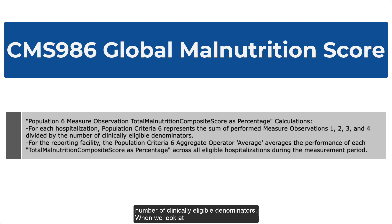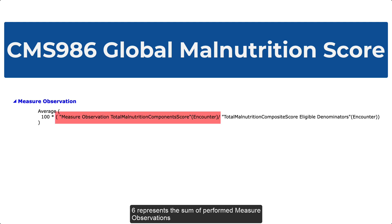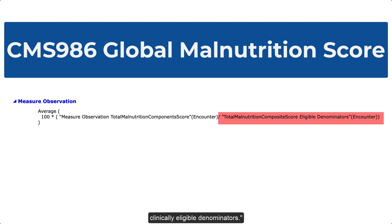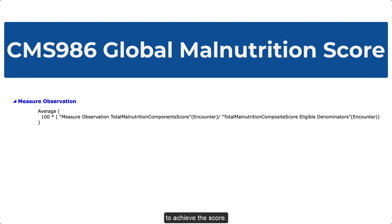When we look at the CQL logic, we see that inside the parentheses are two definition statements that define population criteria 6: the sum of performed measure observations 1, 2, 3, and 4, and the number of clinically eligible denominators. These two statements are divided and then multiplied by 100 to achieve the score.